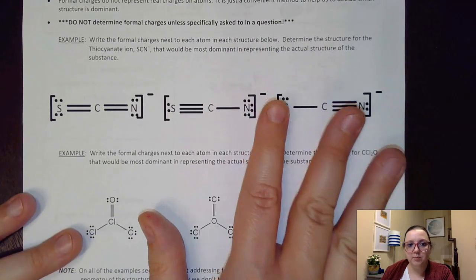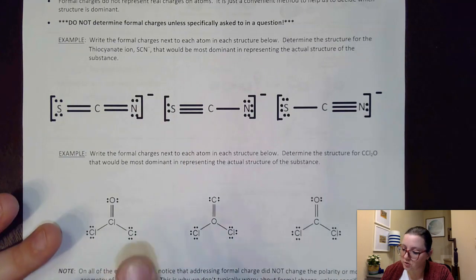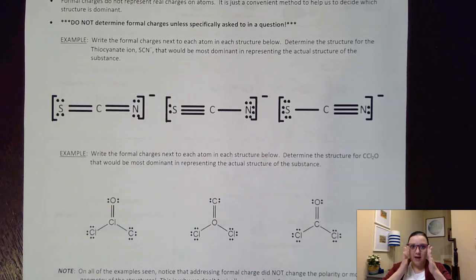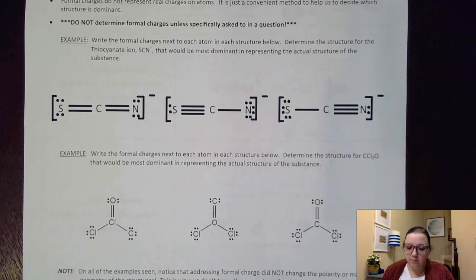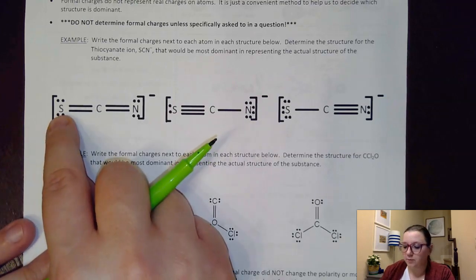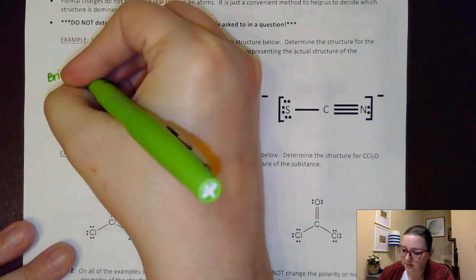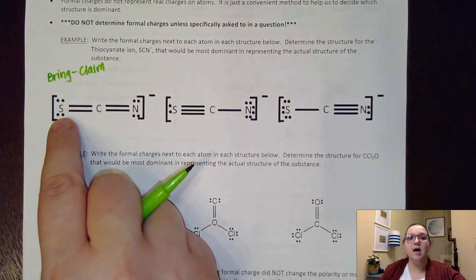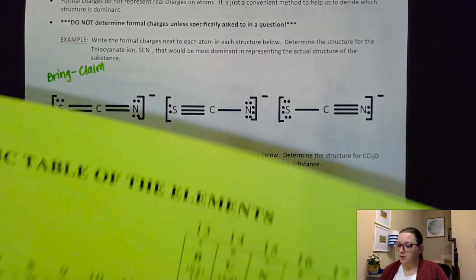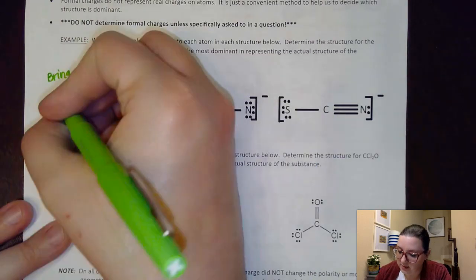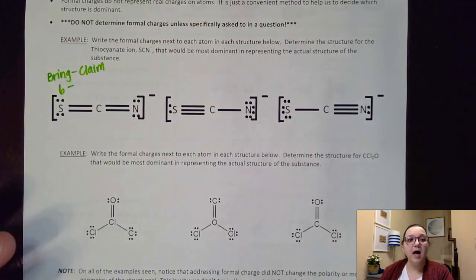What I have in this example are three possible scenarios for the structure of the thiocyanate ion, SCN⁻. We want to assign formal charges and then pick which structure is best. Let me roll through how the formula works, starting with sulfur. Using 'bring minus claim': sulfur is in group 16, so it brings six valence electrons. Now I subtract how many it can claim.